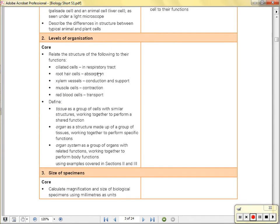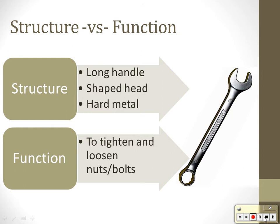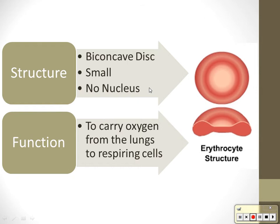We get to specialized cells. There are certain cells that have very specific jobs, and they are built to do these jobs — it's a structure versus function topic. Think of a wrench: it is built so its structure has something to do with its job. Its structure is long-handled with a shaped head made out of hard metal, because its function is to tighten and loosen nuts and bolts. One of the specialized cells we have are red blood cells, or erythrocytes.